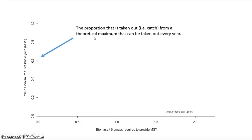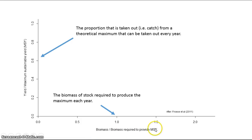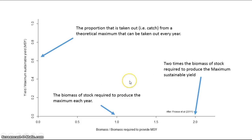What is the maximum amount you can take from a stock every year? On the horizontal axis we have biomass over the biomass required to produce that maximum sustainable yield. This is the biomass of stock required to produce the maximum each year. In order to produce enough fish to catch each year there has to be a standing stock. If there is less than the amount required to produce the maximum sustainable yield, you will either have to catch less or risk taking more out of the stock than will grow back the following year. If this value is 2, then there is twice as much stock around as would be required to produce the maximum sustainable yield.